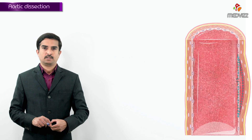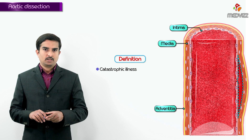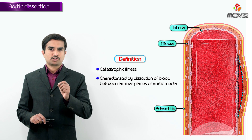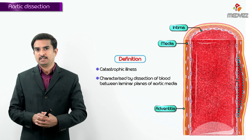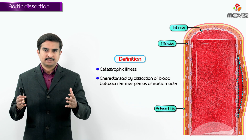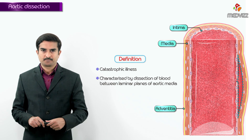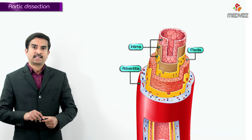We are going to discuss one of the very important and catastrophic illnesses of aortic disease, known as aortic dissection. Majority of authors describe aortic dissection as a catastrophic illness, which is mainly characterized by the dissection of blood between and along the laminar planes of the aortic media. This is the definition of aortic dissection.